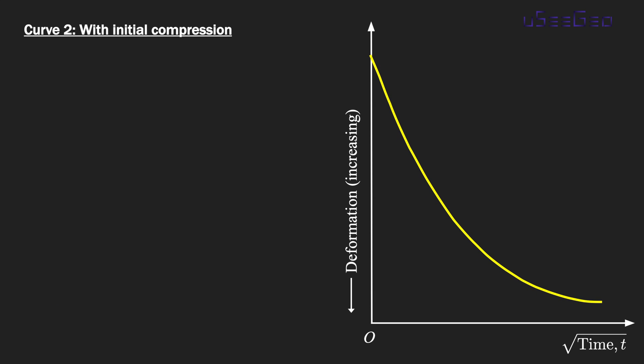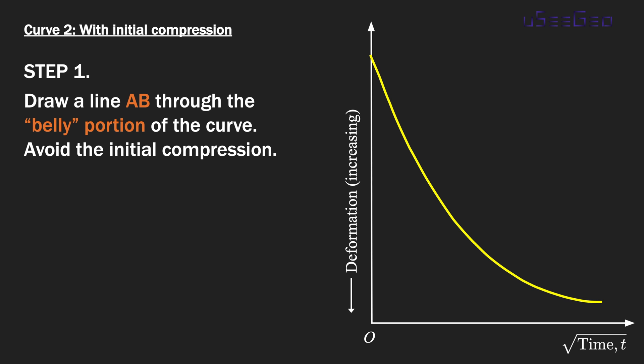Step number one is to draw a line AB, but this time you want to avoid that initial compression. You want to fit a linear line through the belly portion of the curve. You will notice that this intersection A of your straight line is below the initial deformation reading A₀. We're trying to avoid that initial compression to basically eliminate that immediate settlement of the specimen.